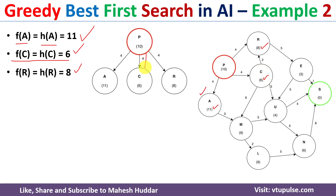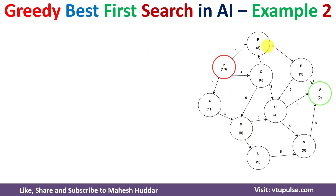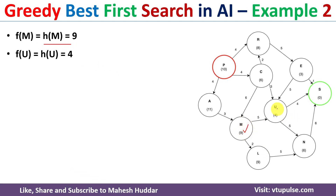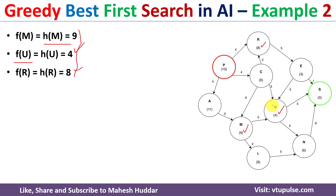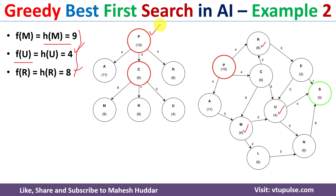We have selected the path from P to C. From C, there are three possible paths: towards M, towards U, and towards R. We calculate the f values: f(M) = h(M) = 9, f(U) = h(U) = 4, and f(R) = h(R) = 8. Among these three, f(U) is minimum. So from C we select the path towards U. The path so far is P → C → U.